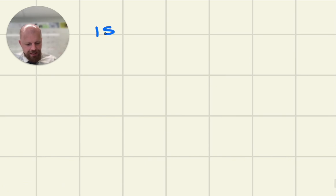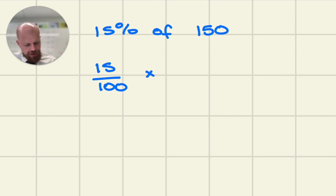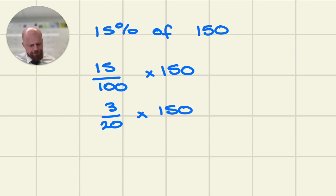So if you had 15% of 150, well, 15% will do 15 out of 100 times by 150. If I simplify the fraction down, I can divide by 5, so I get 3 out of 20 times by 150. If I'm going to divide by 20, if you divide by 10, you get 15. Divide by 2, I get 7.5. So I'm doing 3 times 7.5, which is 22.5.